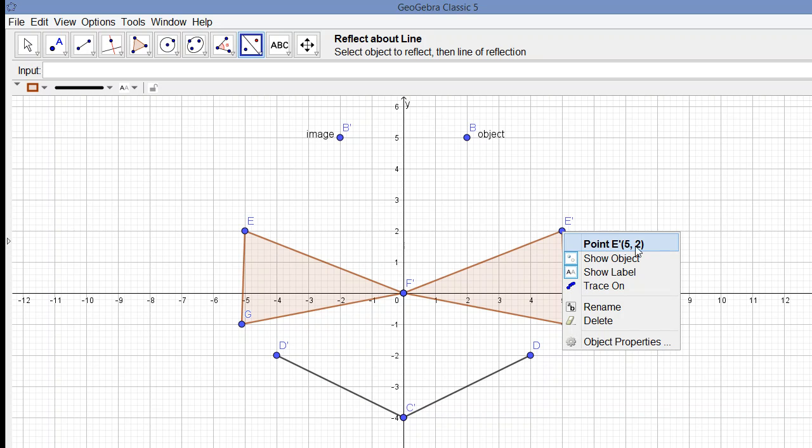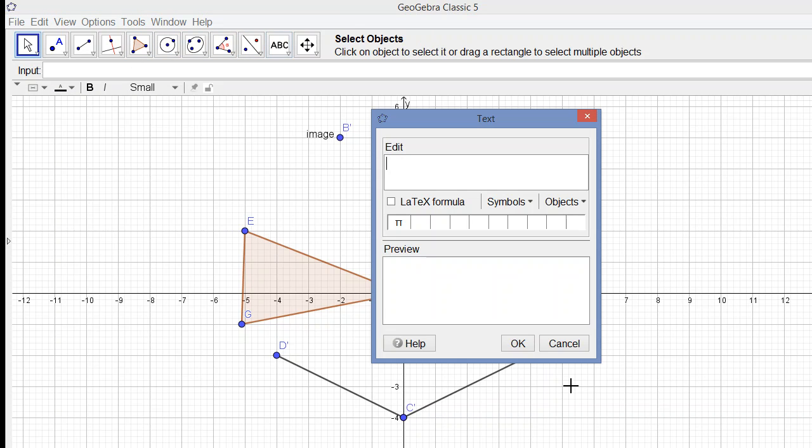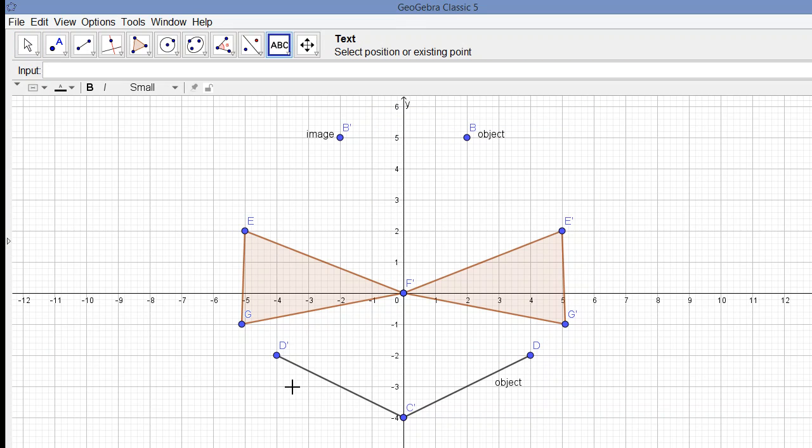Let's just label our object and our image. This is our object over here, the line segment, and this is our image over here.